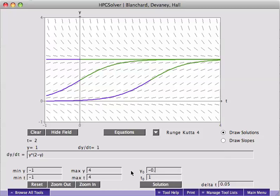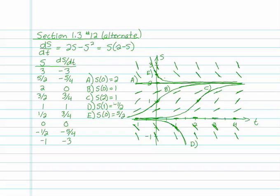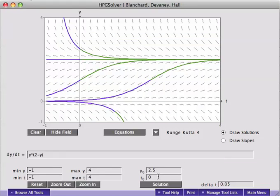S of 1 equals minus 1 half. I'll enter negative 0.5. And S of 0 equals 5 halves, 2.5. Here's the same confirmation with technology of the picture I drew previously.